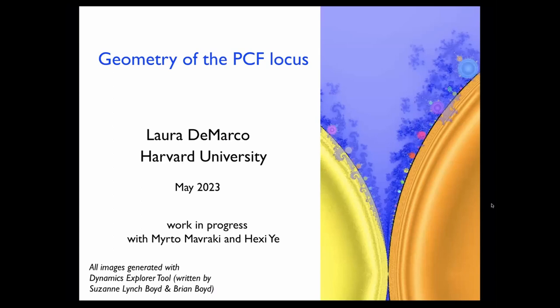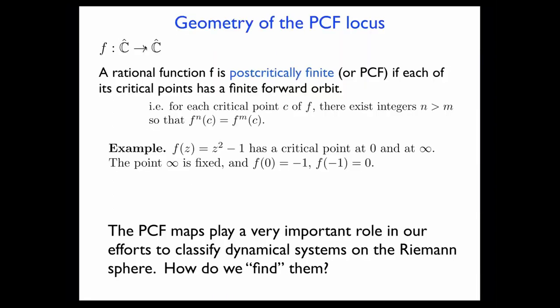The setting is the dynamics of rational maps — holomorphic maps from the Riemann sphere to itself — and I'm interested specifically in the maps that are post-critically finite, or PCF for short. By definition, each of the critical points of the map f has a finite forward orbit — it is eventually periodic, pre-periodic. These maps play a very special role in our study of dynamics on the Riemann sphere.